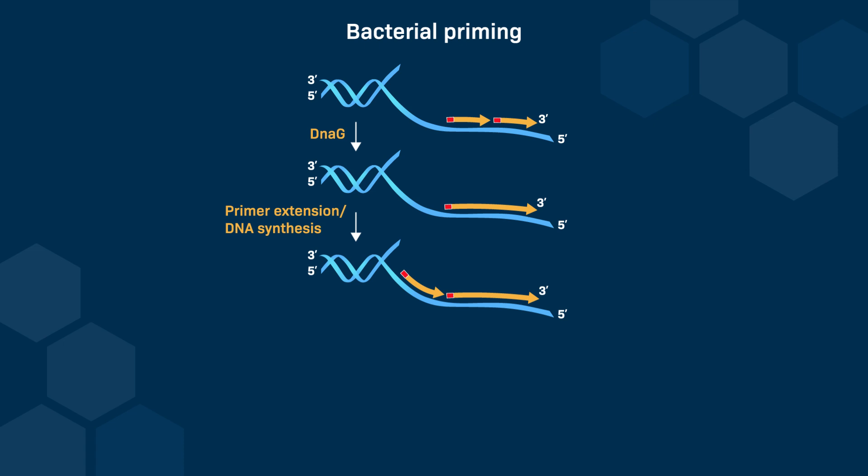Okazaki fragments contain an RNA sequence at the 5' end linked to a DNA sequence at its 3' end. Therefore, the RNA portion of the Okazaki fragment must be removed and replaced by a DNA sequence. The RNA part of the previous Okazaki fragment on the right is removed and digested by an RNase, which results in a gap that is filled by DNA polymerase and which elongates the newly formed Okazaki fragment. Once the gap is filled, the new Okazaki fragment on the left and the pre-existing one on the right are then ligated by a phosphodiester linkage.